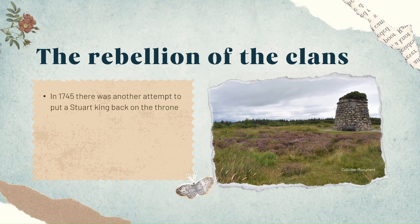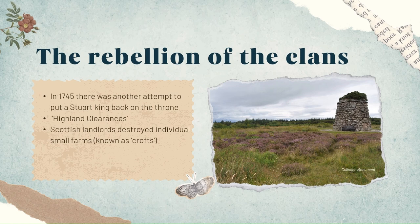A process began which became known as the Highland Clearances. Many Scottish landlords destroyed individuals' small farms, known as crofts, to make space for large flocks of sheep and cattle. Evictions became very common in the early 19th century. Many Scottish people left for North America at this time.